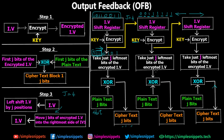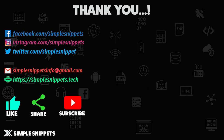I hope you understand output feedback mode — how the encryption happens, the three steps at every iteration, what the shift register is doing, and the difference between output feedback and cipher feedback. If you liked this video and understood the concept, please give it a thumbs up and let me know in the comments. Make sure you subscribe and turn on notifications so you get notified whenever a new video is uploaded. Thanks for watching, see you in the next video.